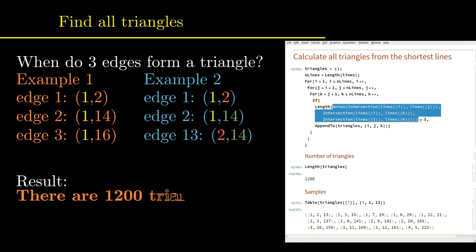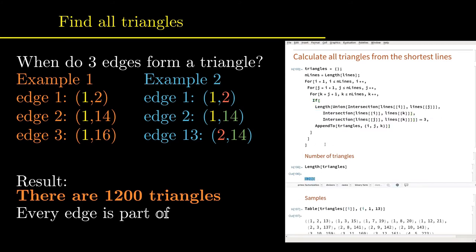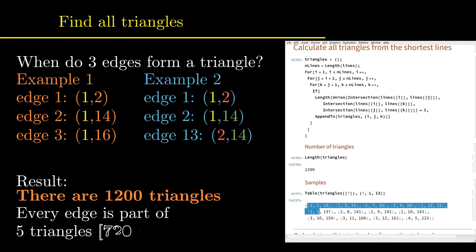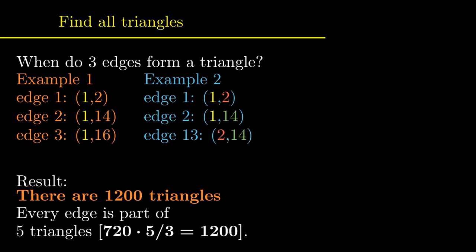It takes a few minutes to check all combinations. But in the end, there is a list of 1200 triangles. The sample shows that each edge is contained in five different triangles. That confirms the number of 1200 triangles as a product of 720 times 5 over 3.